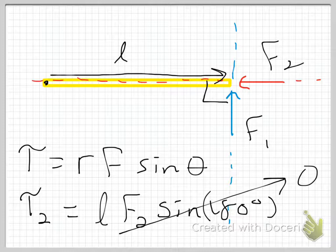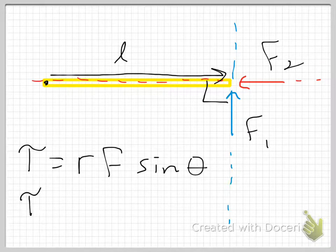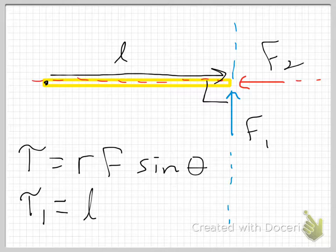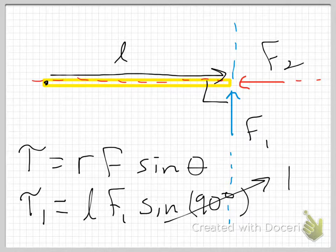However, F1 does provide a torque. The torque due to F1 equals L times F1 times sine(90°). The sine of 90 degrees is just one, so this term goes to one and we've maximized the torque — the sine has taken its maximum value. The torque due to F1 is simply L times F1, where L is what we call the moment arm and F1 is the force.